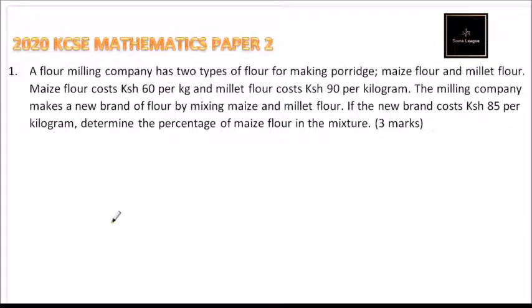This is question number one of 2020 KCSE Mathematics Paper 2. The question says a flour milling company has two types of flour for making porridge: maize flour and millet flour.